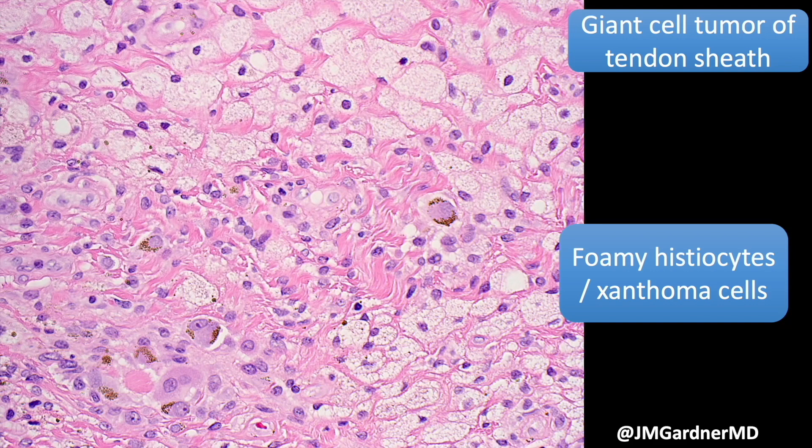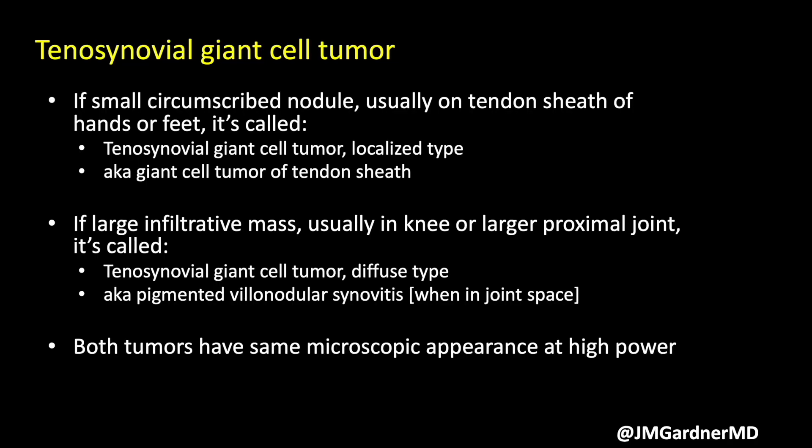Foamy histiocytes are most abundant particularly around the periphery of the lesion. If it's a small circumscribed nodule on the distal extremity, it's called the localized form of tenosynovial giant cell tumor — the other name for that is giant cell tumor of tendon sheath. If it's a large deep infiltrative mass usually around the more proximal larger joints, we call it the diffuse type of tenosynovial giant cell tumor, also known as pigmented villonodular synovitis when it's in a joint space.